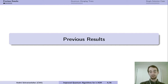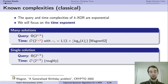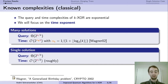In the classical setting, the query and time complexities are going to be exponential, so we focus on the time exponent. In both cases — many solutions and single solution — the query complexity is 2^(n/k). You just need 2^(n/k) elements to have 2^n k-tuples, and one of them XORs to zero with high probability.